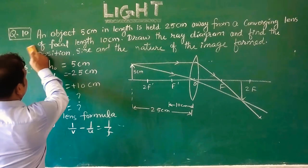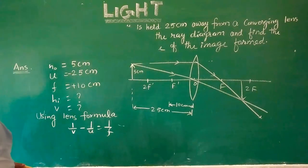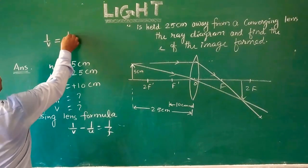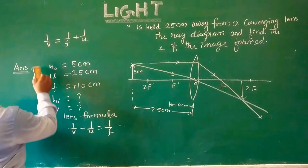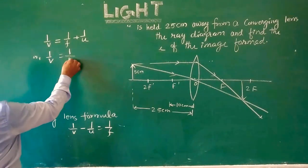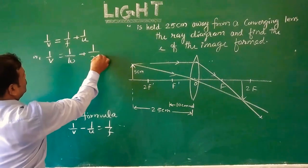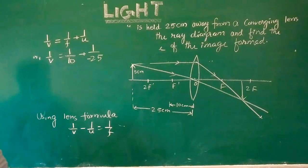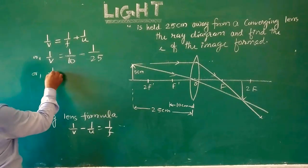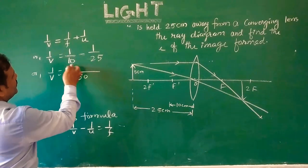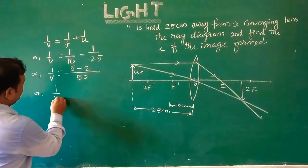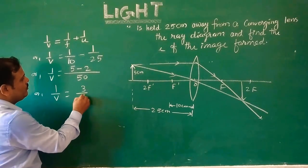Now we put in the values. Rearranging: 1/V equals 1/F plus 1/U. The value of F is 10 and U is 25. Since F is positive and U is negative for a converging lens, it becomes: 1/V = 1/10 + (−1/25). Taking LCM of 50, that gives 5 minus 2, so 1/V equals 3/50.